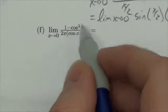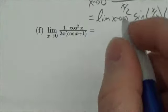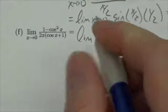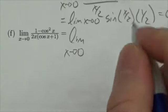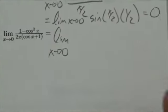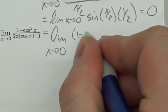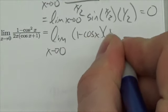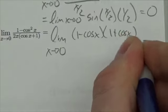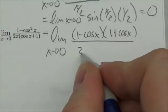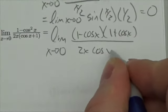Now what I see when I see that is a difference of squares here. What I want to do with this, and I don't even know if this is going to necessarily lead me in the right direction, but my immediate gut reaction to this is to make this 1 minus the cosine of x times 1 plus the cosine of x all over 2x cosine of x plus 1.